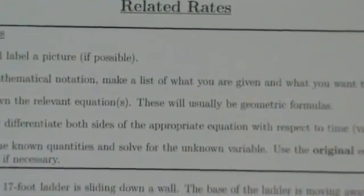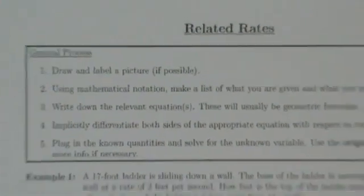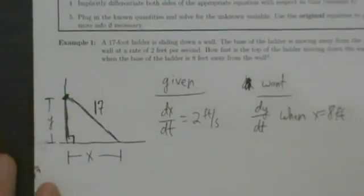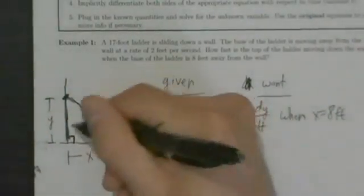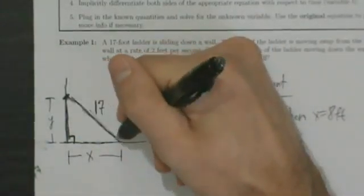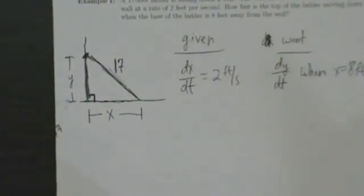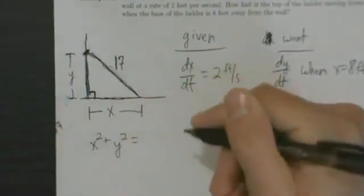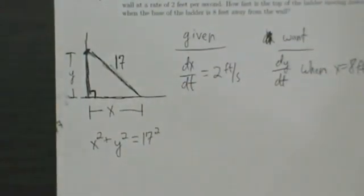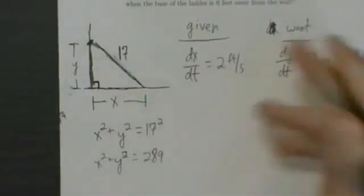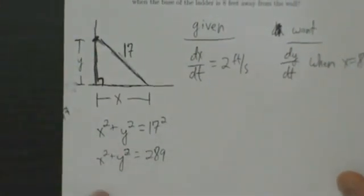Step three: write down the relevant equation or equations — these are usually going to be geometric formulas. Looking at our picture, we have a right triangle with legs X and Y and hypotenuse 17. The relevant formula is the Pythagorean theorem: x² + y² = 17², or x² + y² = 289. That's step three.